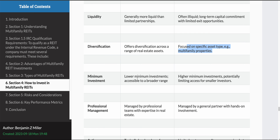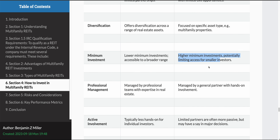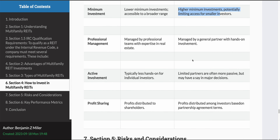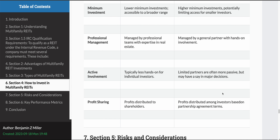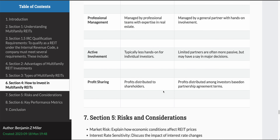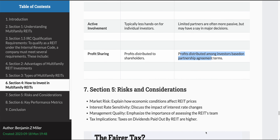The minimum investments are sometimes lower in private REITs, but in multifamily syndications they are typically higher. The management in both cases is professional — in a syndication, the general partner normally has experience with multifamily. Profits are distributed to shareholders with a private REIT, while in a syndication properties are distributed to investors based on whatever the partnership agreement terms are.